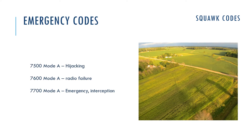There are three emergency codes you need to remember. 7500 is for hijacking. 7600 is for radio failure. 7700 is used in an emergency situation or in case of interception. There is a special saying to remember these three codes: 75 — taken alive; 76 — technical glitch; 77 — going to heaven.